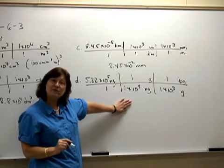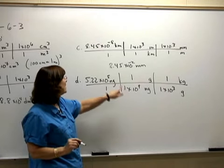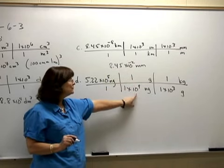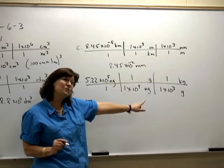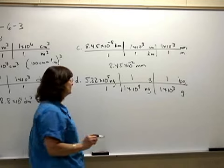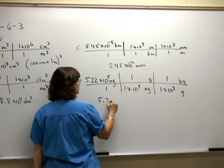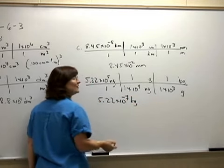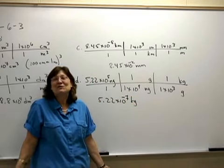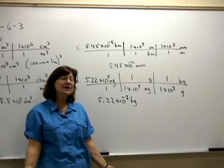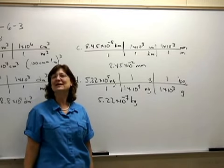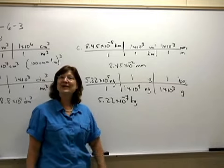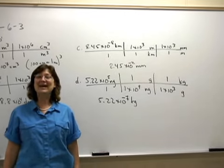Now I'm dividing, so I'm going to subtract those exponents. 5 minus 9 is minus 4, minus 3 is minus 7. My answer is 5.22 times 10 to the negative 7 kilograms. And you know that I say minus 7, it's the same as negative 7. They're just different ways of saying the same thing. That's how you do number 1.